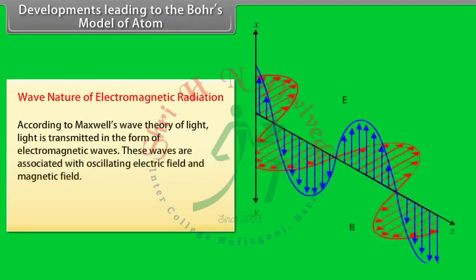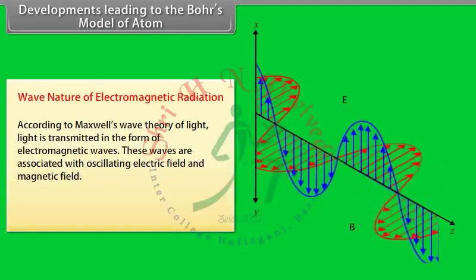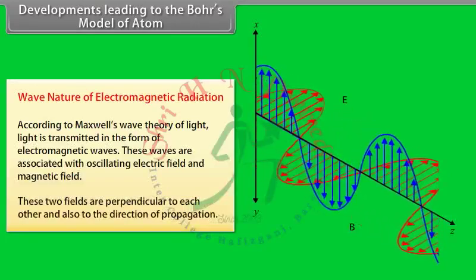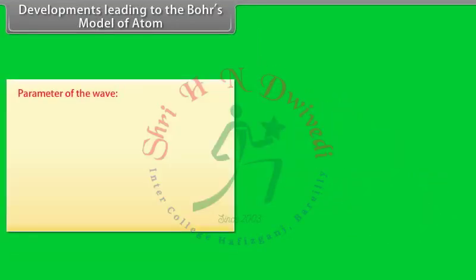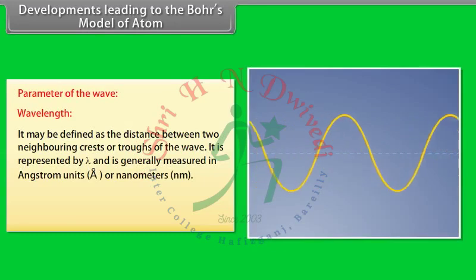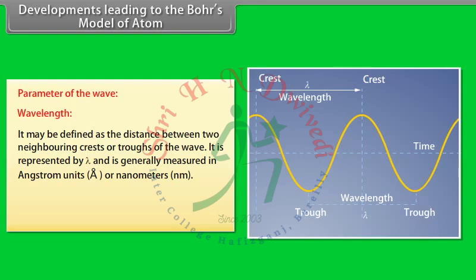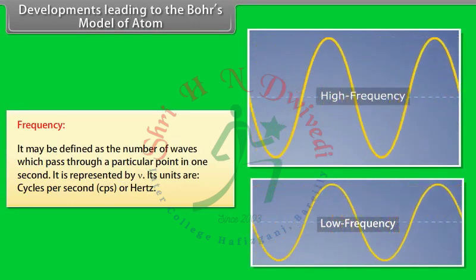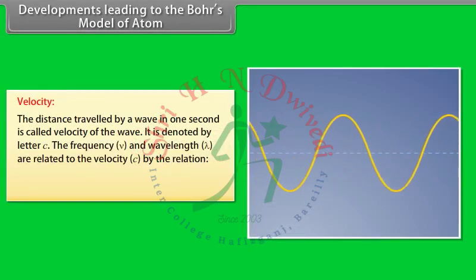Developments leading to Bohr's model: Wave nature of electromagnetic radiation. According to Maxwell's wave theory, light is transmitted as electromagnetic waves associated with oscillating electric and magnetic fields, which are perpendicular to each other and also to the direction of propagation. Wavelength may be defined as the distance between two neighboring crests or troughs of the wave, represented by lambda, measured in angstroms or nanometers. 1 angstrom = 10⁻¹⁰ m; 1 nanometer = 10⁻⁹ m. Frequency is the number of waves passing through a point per second, represented by nu, with units of hertz.